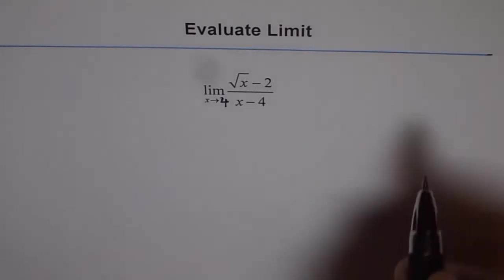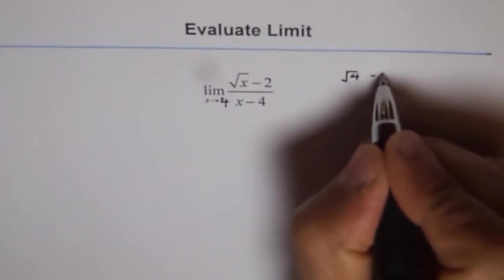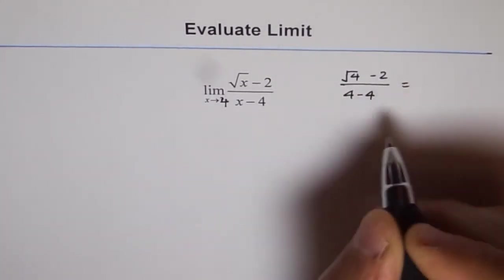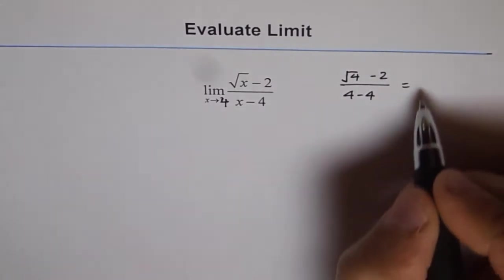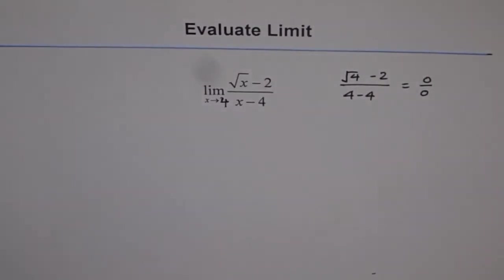Let us substitute 4 here and see what we get. We get square root of 4 minus 2 over 4 minus 4. Square root of 4 is 2, so 2 minus 2 is 0. We get 0 over 0. Since we get 0 over 0, we know that we can simplify this function and then find the limit.